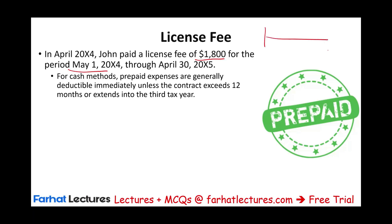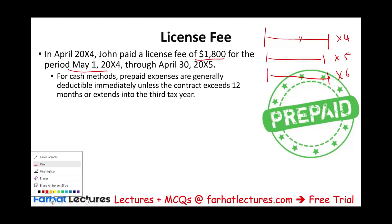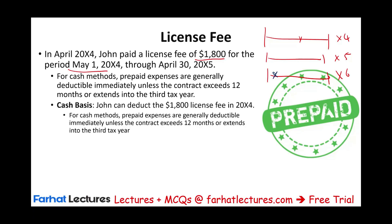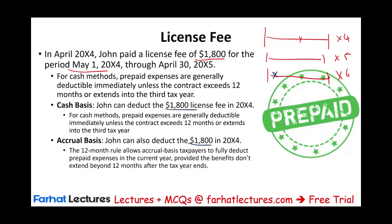So we paid in May — this is x4, this is x5, and year three is x6. As long as this prepayment does not go into year x6, we should be able to expense it. For cash basis, we have this 12-month special exception. For accrual, we could also deduct the full $1,800 because of this 12-month exception. The 12-month rule allows an accrual taxpayer to fully deduct prepaid in the current year, provided the benefit doesn't exceed 12 months after the tax year end. For both methods, we can take the deduction.